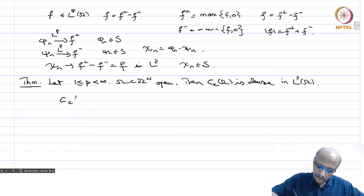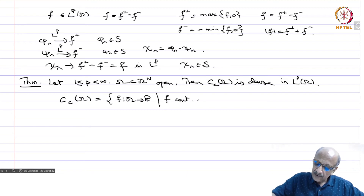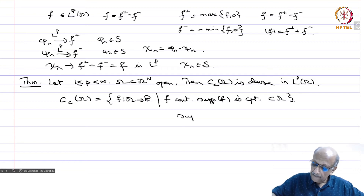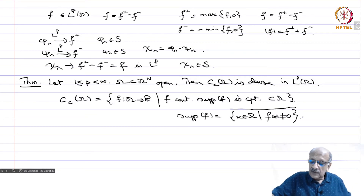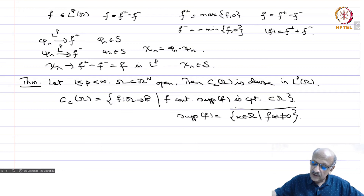Cc of omega is the set of all continuous functions f from omega to R such that the support of f is compact and contained in omega. The support of f is the closure of the set of all x in omega such that f(x) is different from 0 — a closed set. If this set is compact, we say f is a continuous function with compact support.